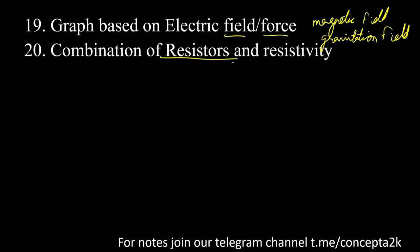Combinational resistors — series or parallel. Equivalent resistor. Wheatstone bridge — if you have a balanced Wheatstone bridge, you can simplify the circuit. Also Meter Bridge — make sure to spell it correctly.